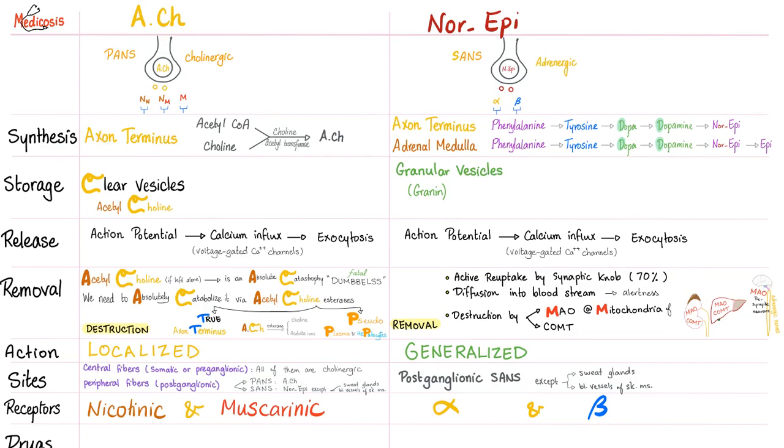Synthesis: Acetylcholine is made in the axon terminus from acetyl-CoA and choline using choline acetyltransferase. Norepinephrine - if you're an axon terminus: phenylalanine, tyrosine, dopa, dopamine, norepinephrine, and stop. Why stop? Why not continue to epinephrine? Because the axon terminus doesn't have the enzyme for converting norepinephrine to epinephrine. It's called phenylethanolamine N-methyltransferase. N because we put the methyl group in the normal position.